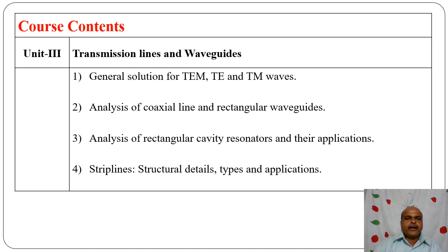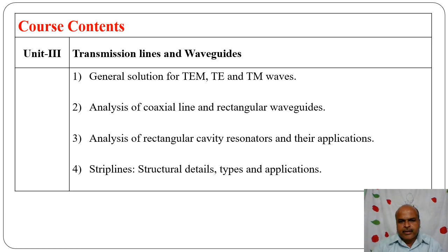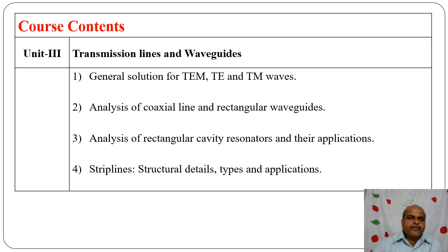Chapter three covers transmission lines and waveguides. We start electromagnetic engineering here: general solution of transverse electromagnetic (TEM) wave, transverse electric (TE), and transverse magnetic (TM) waves. We also explain the difference between TE and TEM waves, then analysis of coaxial line and rectangular waveguide. A waveguide is a hollow metallic tube. Then analysis of rectangular cavity resonator and their applications — a cavity resonator is a waveguide in which both ends are closed.